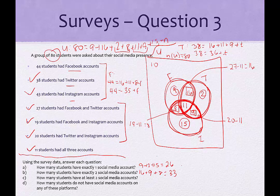Then letter C asks how many students have at least two social media accounts. How is this different from B? At least two means two or all three. So it includes those 33 who had exactly two, but now we also add in the ones who had all three, which is 11. So that would be 33 plus 11, giving 44 who have at least two. Then letter D asks how many students do not have any of these social media accounts — we already figured that out. That was 10.